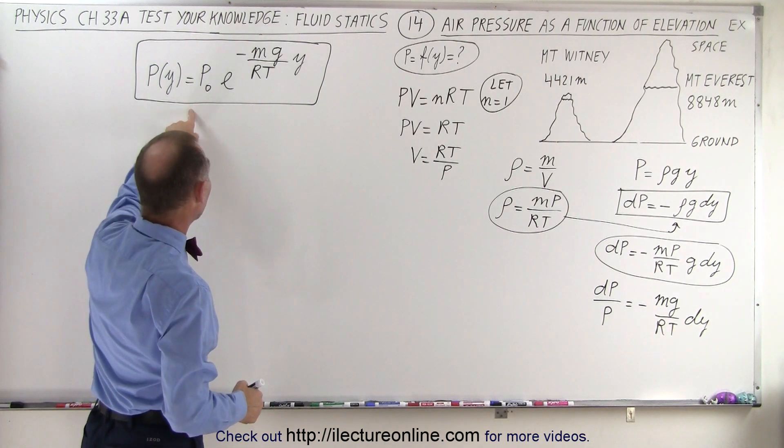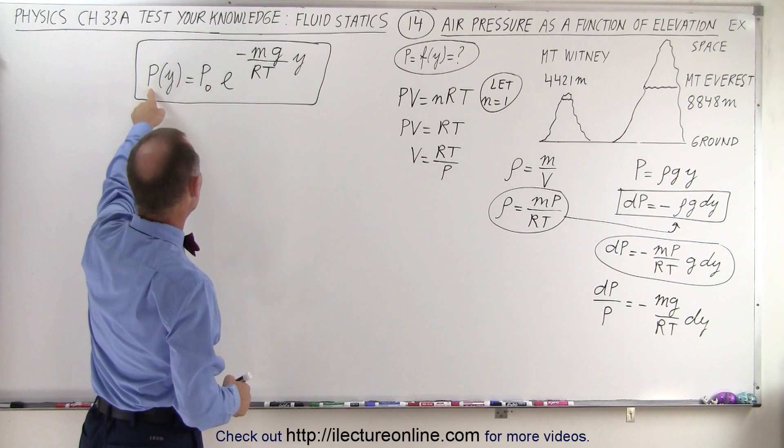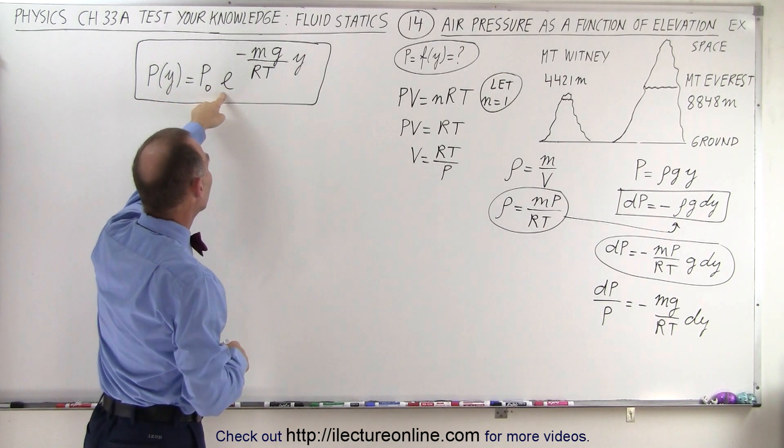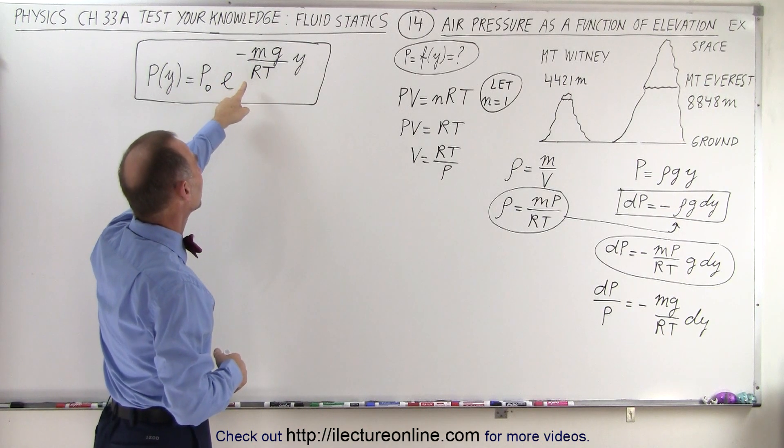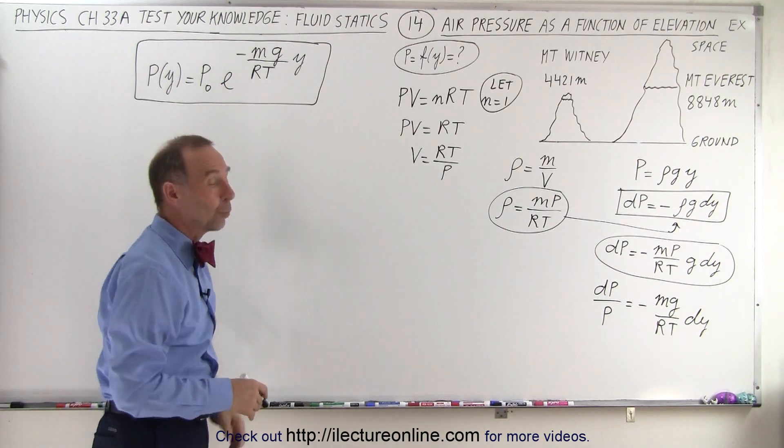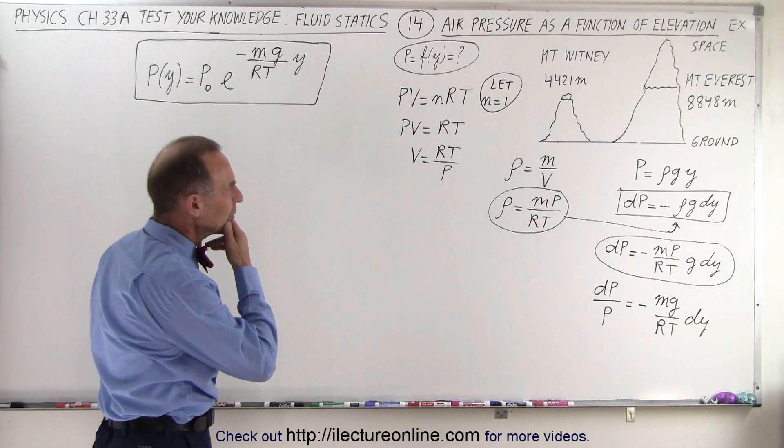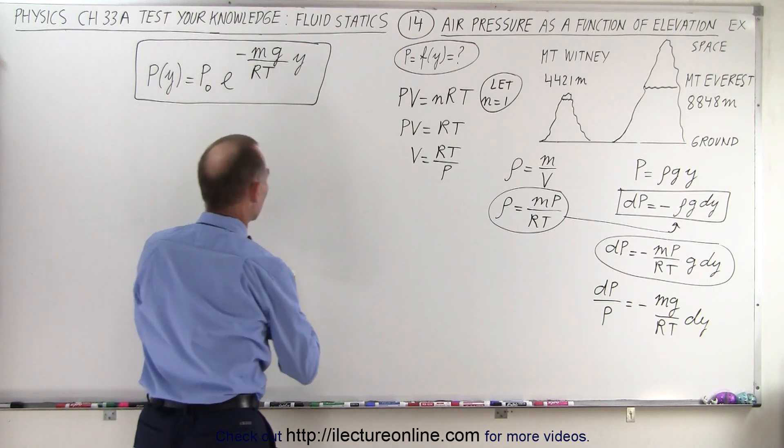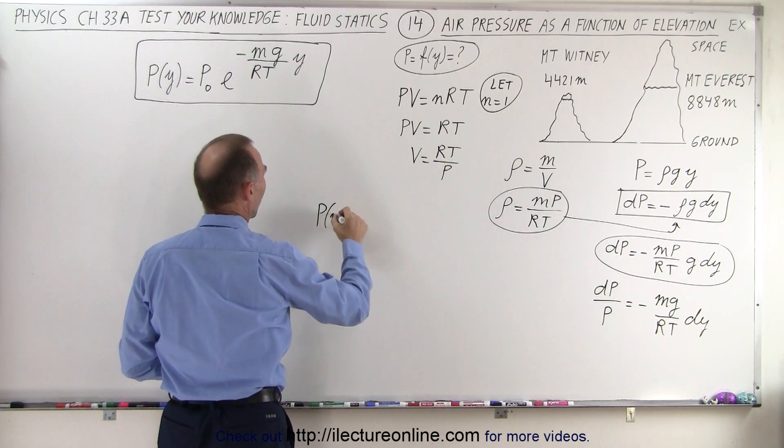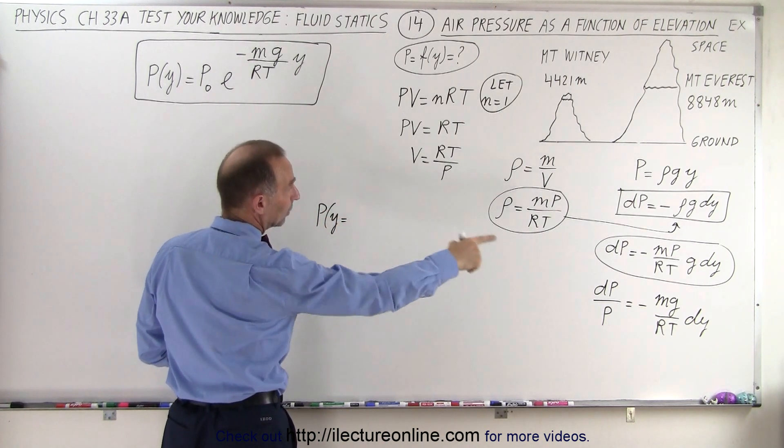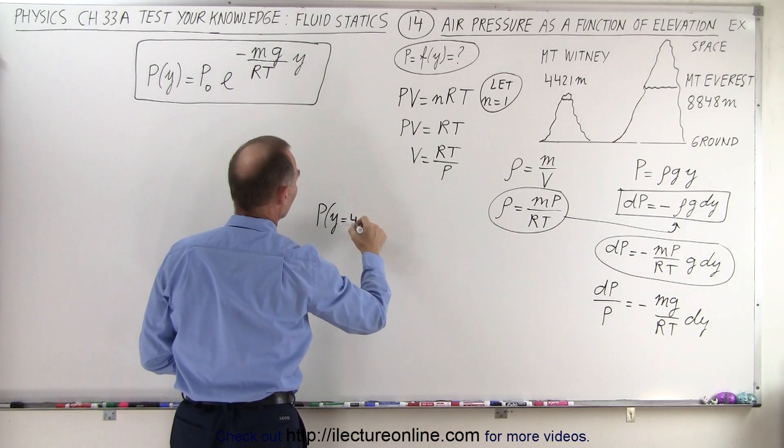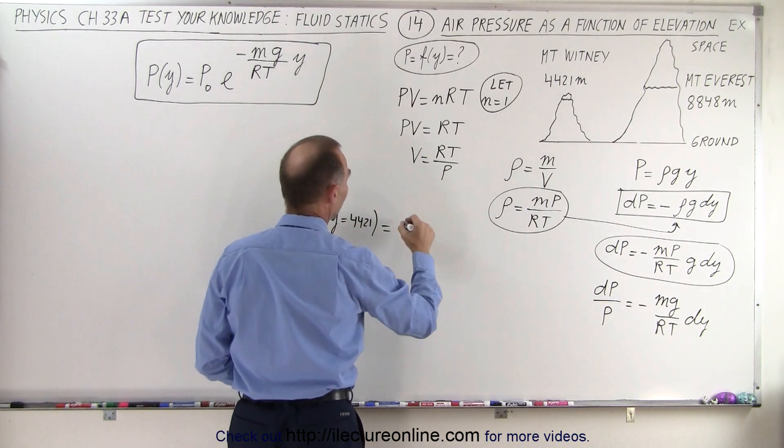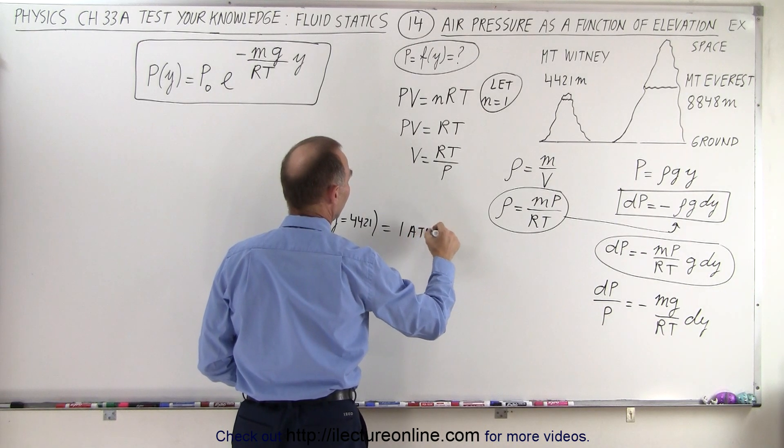On the last video, we got this equation where the pressure as a function of height was equal to the atmospheric pressure at sea level times e to the minus mg divided by RT times y, y being the height. So how do we do that? Let's plug in numbers and see what we get. So the pressure when y is equal to the height would be equal to 4,421 meters is equal to one atmosphere, atmospheric pressure at sea level.